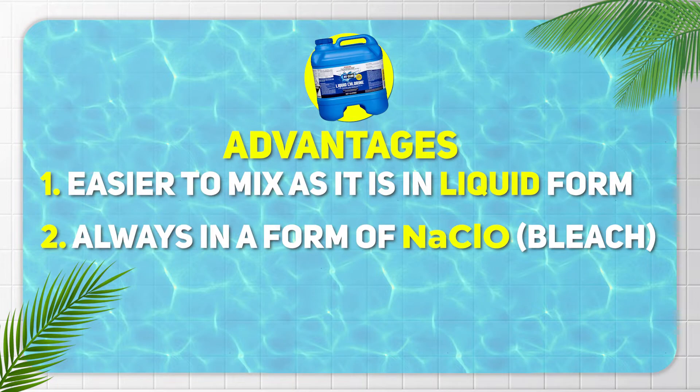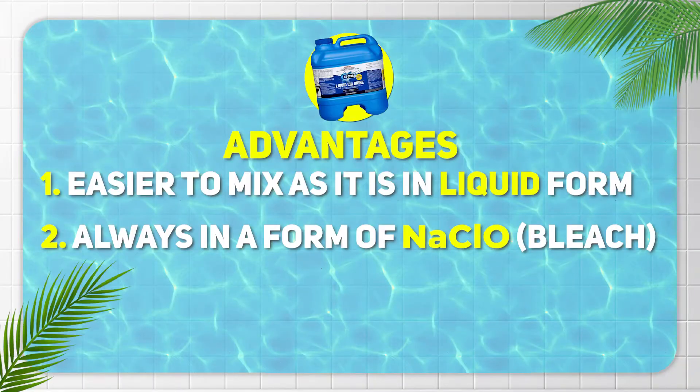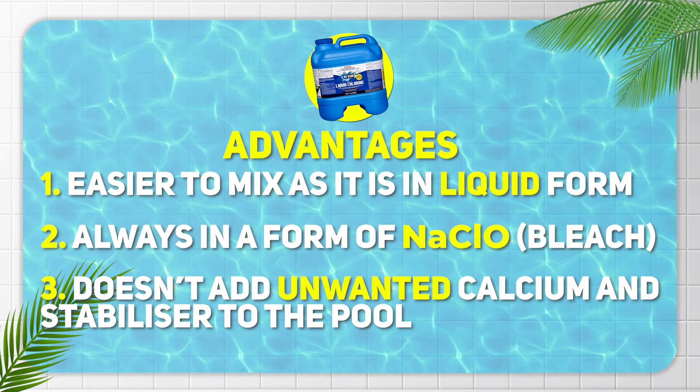The other benefit of using liquid chlorine is that it is always in the form of sodium hypochlorite, which is basically just bleach but usually a stronger version. The main benefit is that it doesn't add unwanted calcium or stabilizer to your pool. A lot of solid granular forms of chlorine are what's called stabilized chlorine, which means they come with cyanuric acid built into them. Using stabilized chlorine over the long term can result in too much stabilizer in your pool, which can actually render your chlorine ineffective.